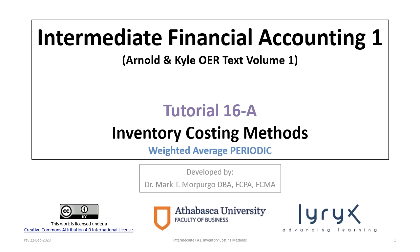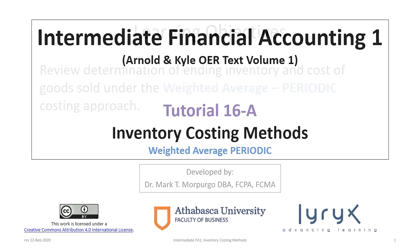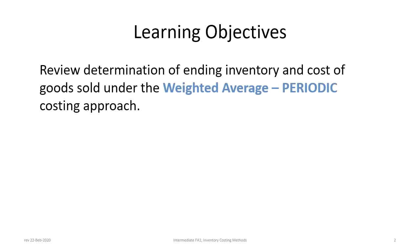Hi there and welcome to Intermediate Financial Accounting 1, Tutorial 16a. This is the first of three related tutorials where we will look at inventory costing methods. Tutorial 16a focuses on the weighted average periodic method of inventory costing. We have only one learning objective: to review how to determine ending inventory and cost of goods sold under the weighted average periodic costing approach.